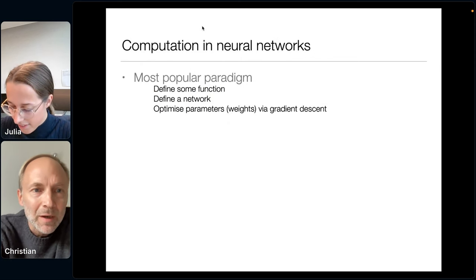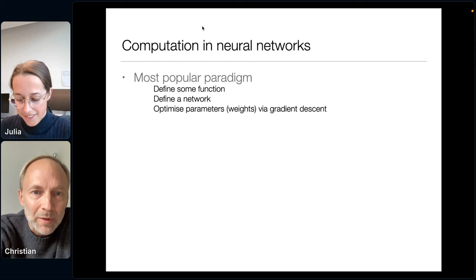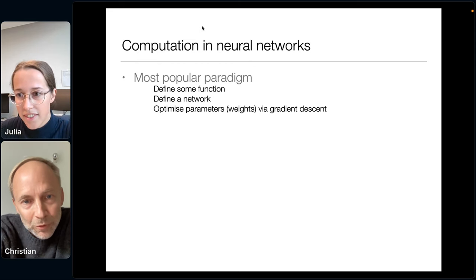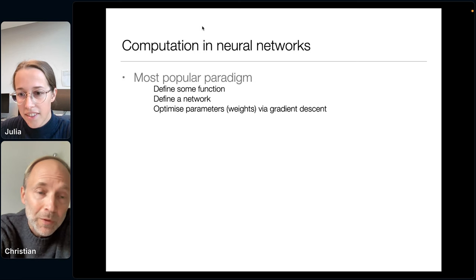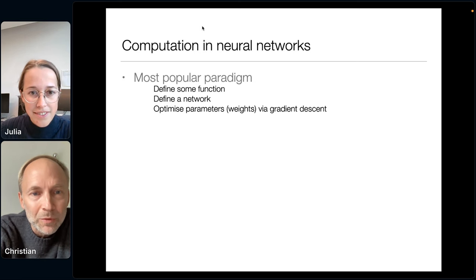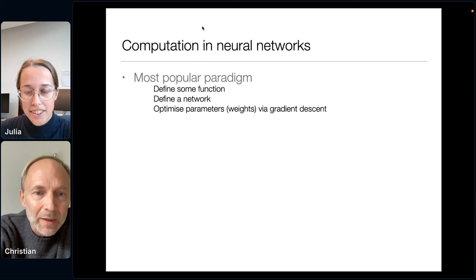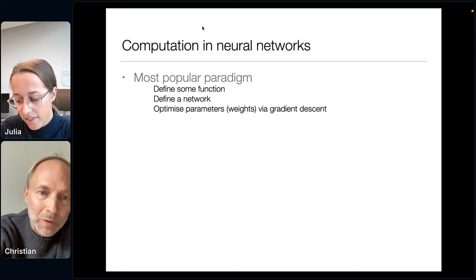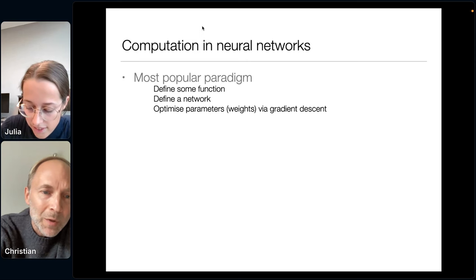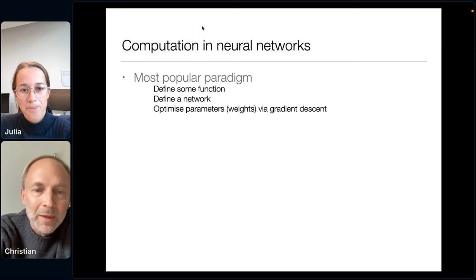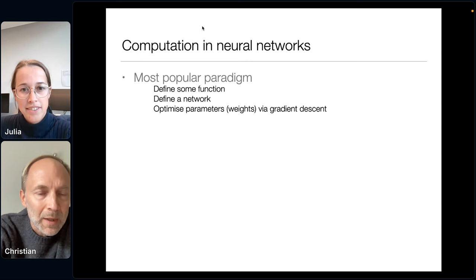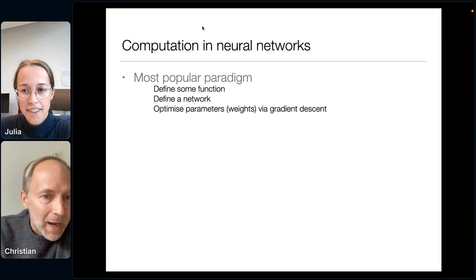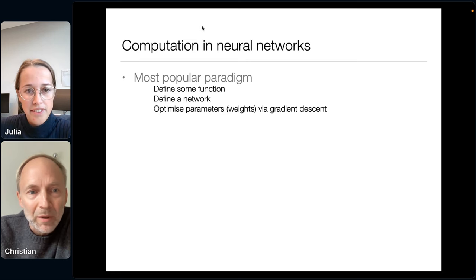Let's start by thinking about computational neural networks. The most popular paradigm these days is the following: to perform any computation, we first define some function we want to compute — for instance, images mapped onto labels. Then we define a network such as a feedforward or recurrent network, and then we optimize the parameters, usually the synaptic weights, via gradient descent. We do that both in AI and machine learning, but also in biology.